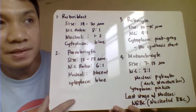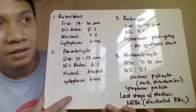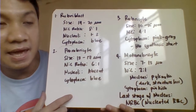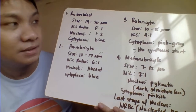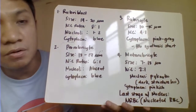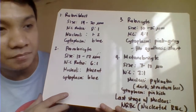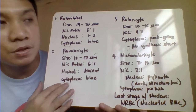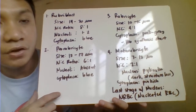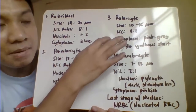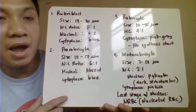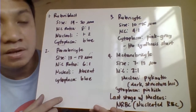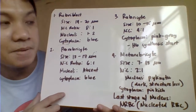The rubricyte, also known as polychromatophilic normoblast or polychromatophilic erythroblast, measures 10 to 15 micrometers in diameter with a nucleocytoplasm ratio of 4:1. The cytoplasm becomes pink-gray because hemoglobin synthesis begins at this stage — it is the rubricyte stage where hemoglobin synthesis starts, causing the color change from blue to pink-gray.